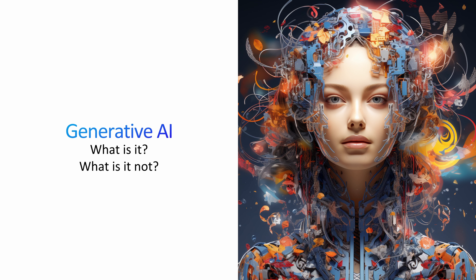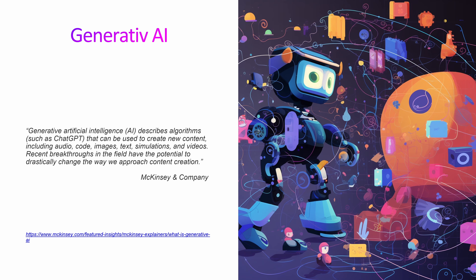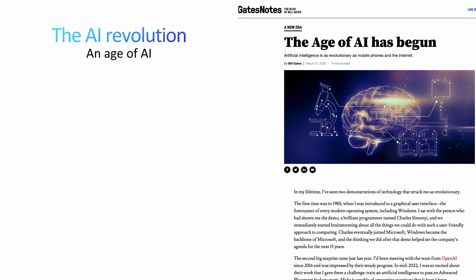Generative AI is a collective term for all of these tools — tools like ChatGPT, Bing Chat, Bard Chat from Google, and also image generators and so much more. This is a definition from McKinsey and Company, one of the biggest business consultants in the world. They define generative AI as algorithms such as ChatGPT that can be used to create new content, including audio, code, images, text, simulations, and videos. Recent breakthroughs in the field have the potential to drastically change the way we approach content creation — and personally I feel it has the potential to drastically change the way we do a lot of things and also our jobs.